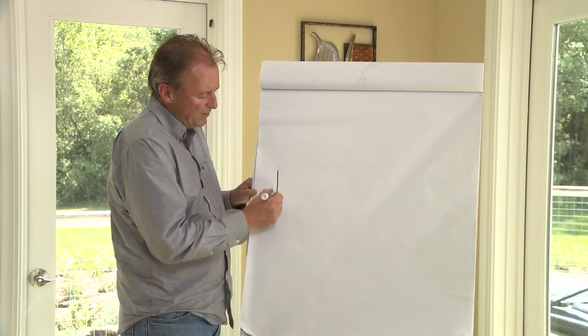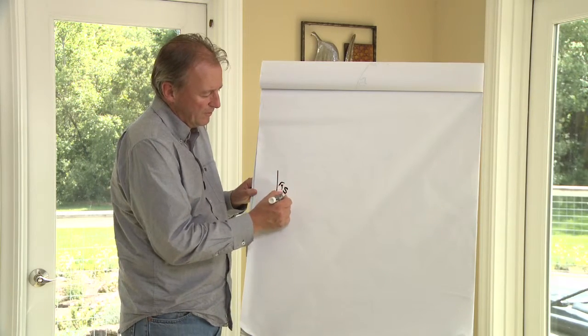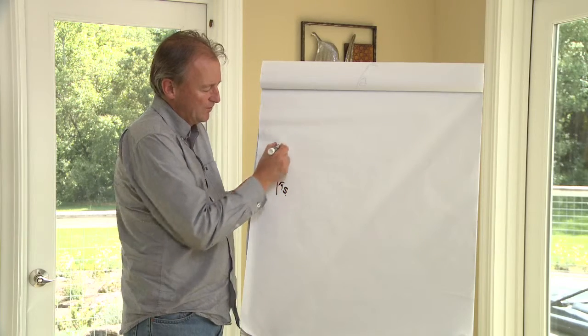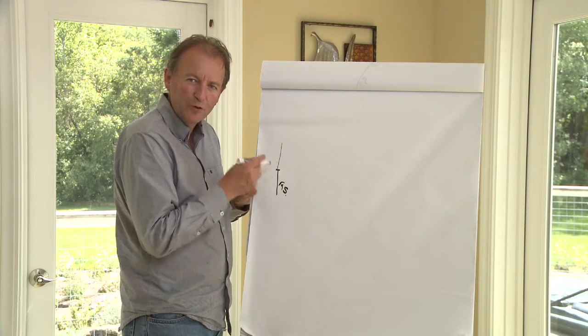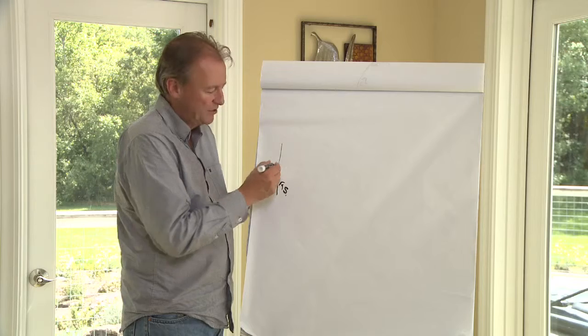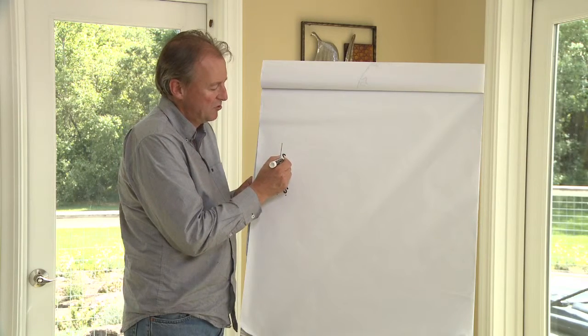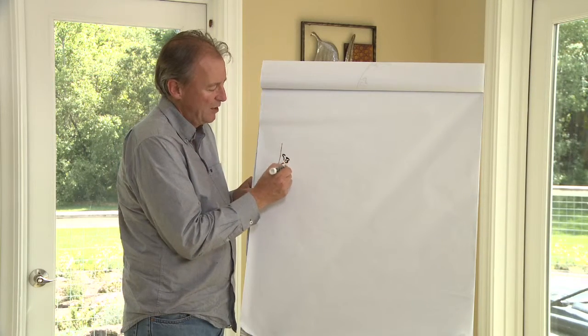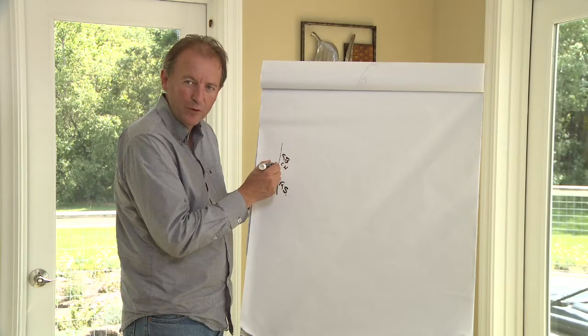At the base of the vine we have a thing called a rootstock, and on top of that rootstock is where we plant or graft or bud the clone or the mass selection. This is Sauvignon Blanc or Chardonnay or whatever Vitis vinifera varietal we want to put on top.